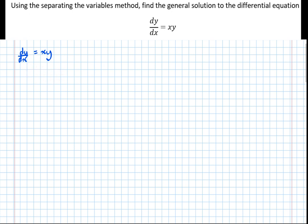So what we need to do, it's called the separating the variables method. So step one of this is to separate the dy and the dx by multiplying by dx. So separate the dy by dx by multiplying by dx.